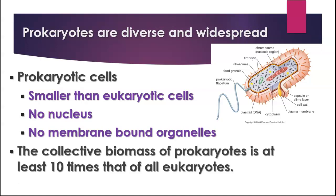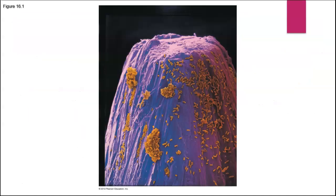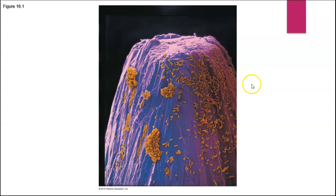They're smaller than eukaryotic cells. They don't have a nucleus or membrane-bound organelles, but they're very common. The collective biomass of prokaryotes is at least 10 times that of eukaryotes. Some scientists have said that probably as much as 10% of your weight is basically bacteria, because we have a lot of bacteria living in and on our bodies. This picture illustrates their very small size — this purple structure is not a mountain; it is actually the tip of a pin. These little orange things are bacteria on the point of a pin. So very, very small.